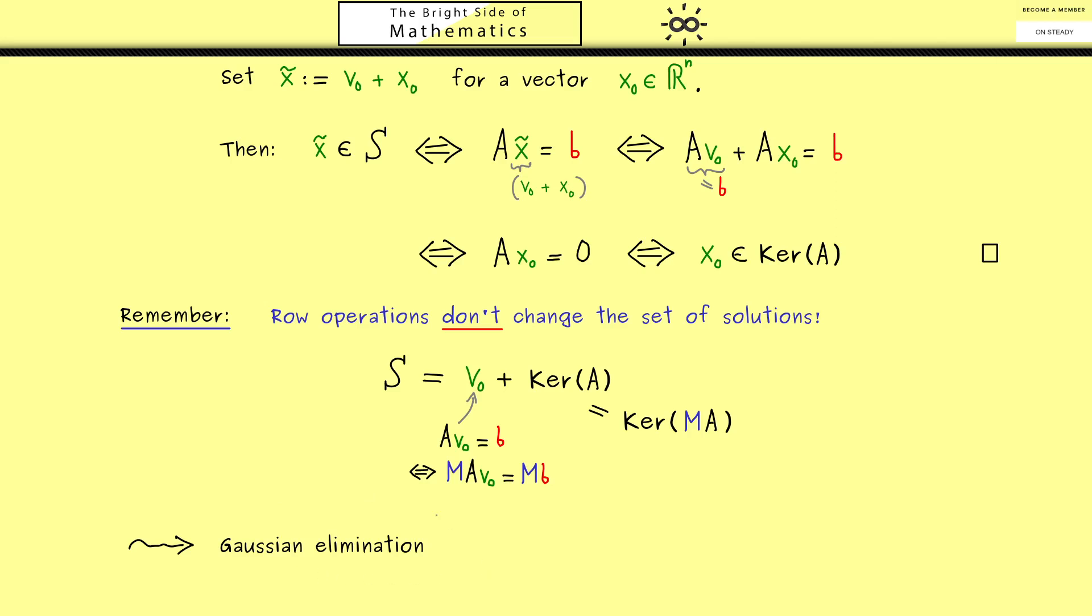In all details we will discuss it in the next video, but we already know it has to give us three parts. First, it has to tell us if b is actually an element of the range of A or not. This is important, because if this is not the case, we are already finished, because we know the set of solutions is empty.